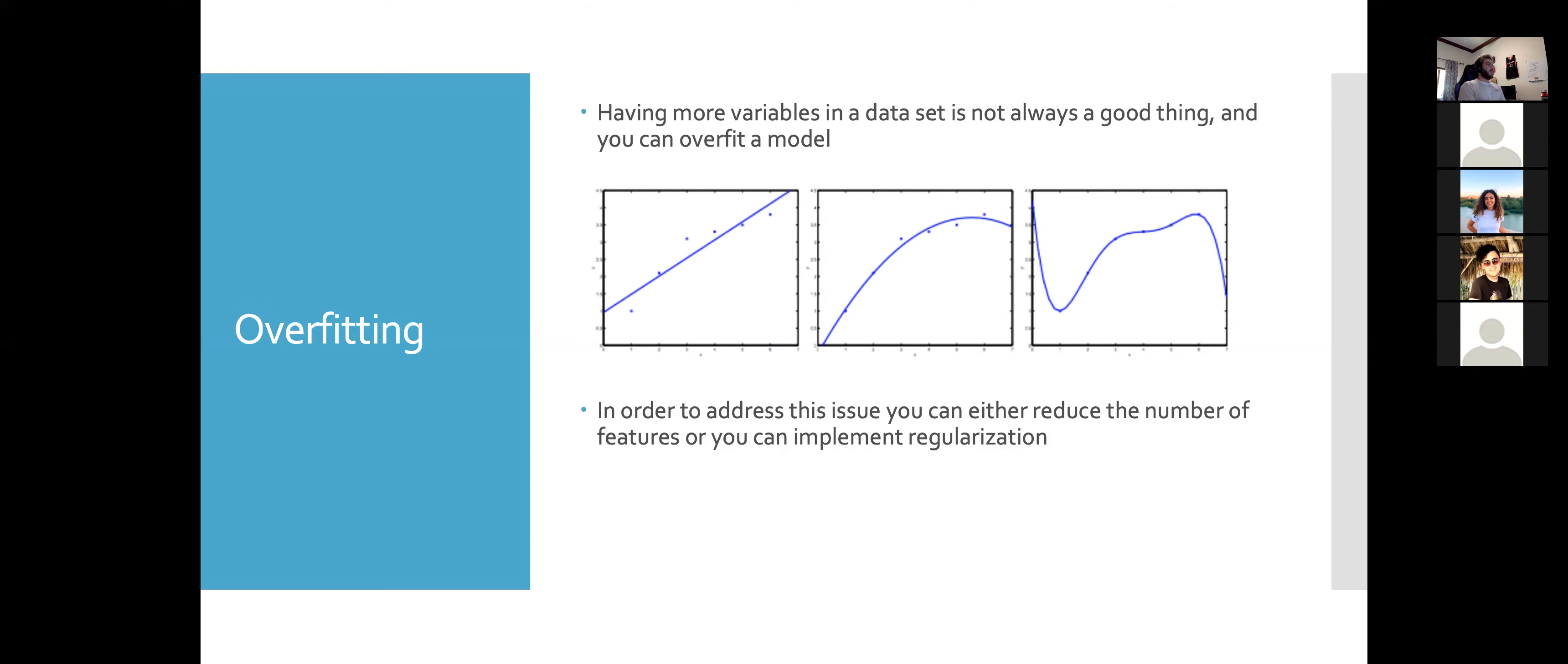Another area I'll talk about is overfitting. Overfitting is having - having more variables in a data set is not always a good thing because you can overfit a model. In this first square, this is an example underfitting, because we just get a line through this and these dots, we clearly see it should be a rounded off model. This middle model is what we want, and then on the right is an example of overfitting.